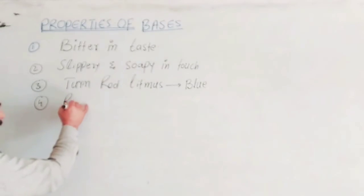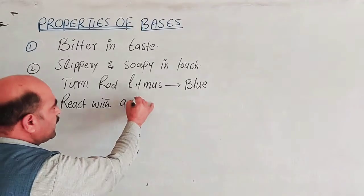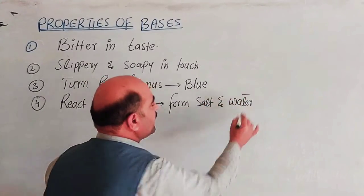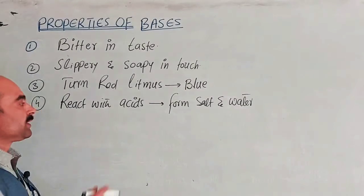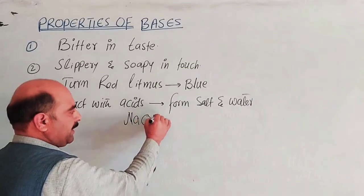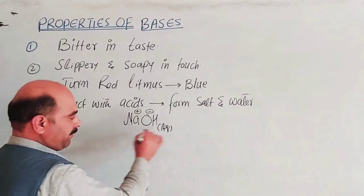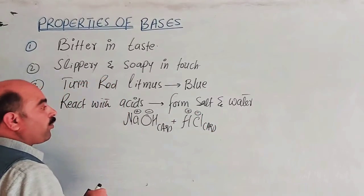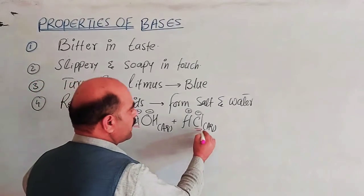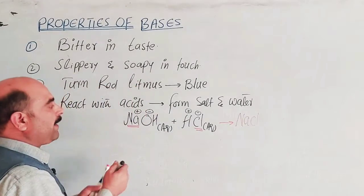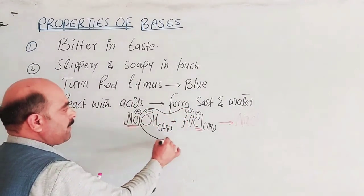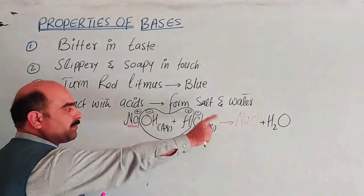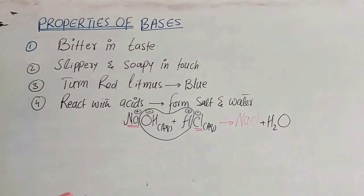Another property of bases is that they react with acids to form salt and water. For example, sodium hydroxide reacts with HCl. Sodium ions and chloride ions combine to form salt (NaCl), and hydrogen ions and hydroxide ions combine to form water (H₂O). This acid-base reaction produces salt and water.